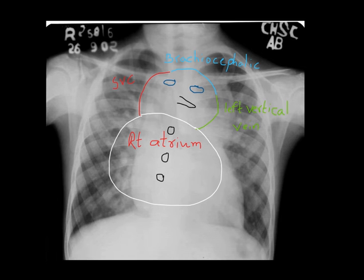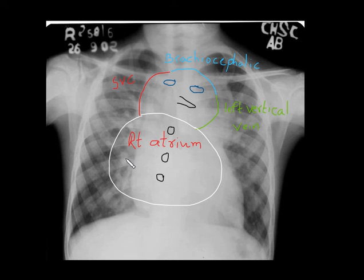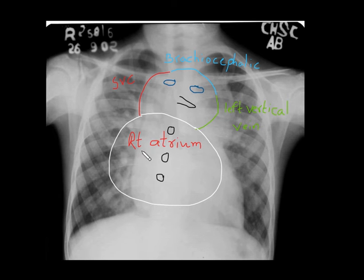The pictorial depiction shows: on the right half is the dilated SVC, on top is the brachiocephalic vein, the left half is the left vertical vein, and the body is formed by the enlarged right atrium. This is the classical snowman appearance, also called figure-of-eight appearance or cottage loaf heart.